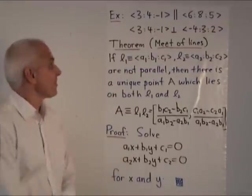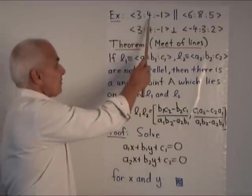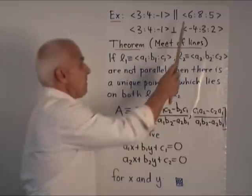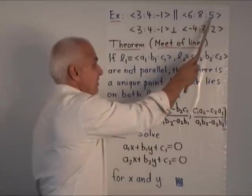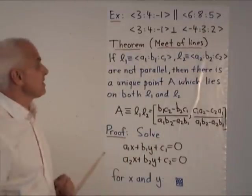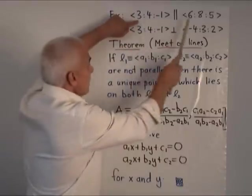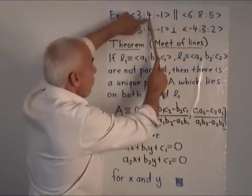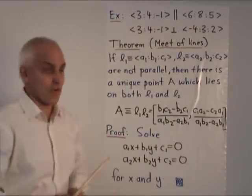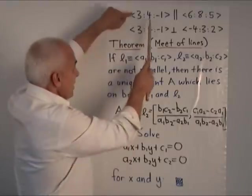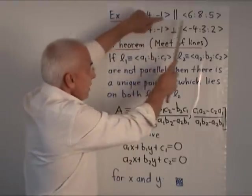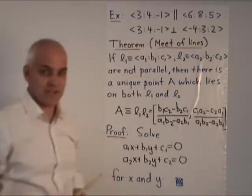For example, the line <3:4:-1> is parallel to the line <6:8:5> since 3 times 8 minus 4 times 6 equals 0, which amounts to saying that this proportion 3 to 4 equals this proportion 6 to 8.